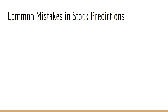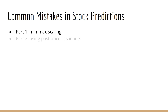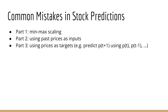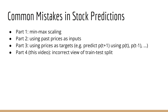In this episode, we are going to continue our video series on common mistakes when it comes to stock predictions. To recap, this is the fourth video in the series. The first video discussed min-max scaling. The second discussed why using lagged prices as inputs to your autoregressive model does not make sense — for instance, trying to predict the price at time t+1 using prices at t, t-1, t-2, and so forth. The third video discussed why using prices as targets also does not make sense. In this fourth video, we are going to discuss why many blogs and online courses are using incorrect train test splits.